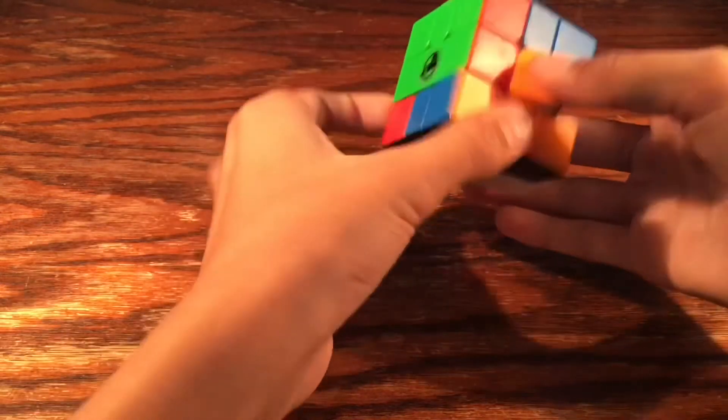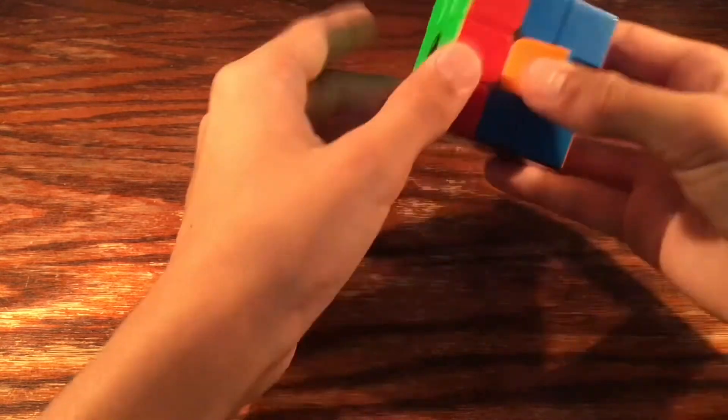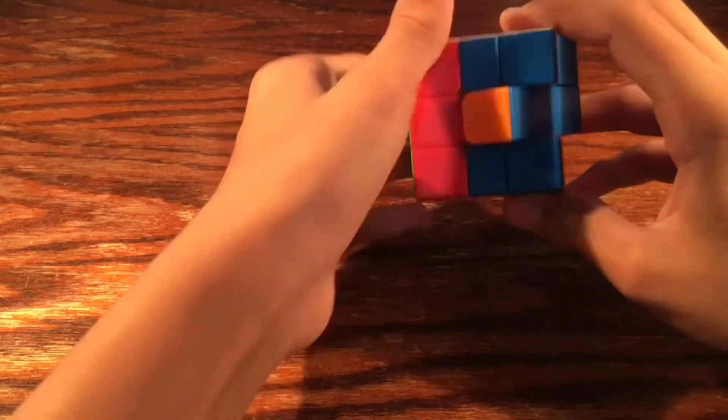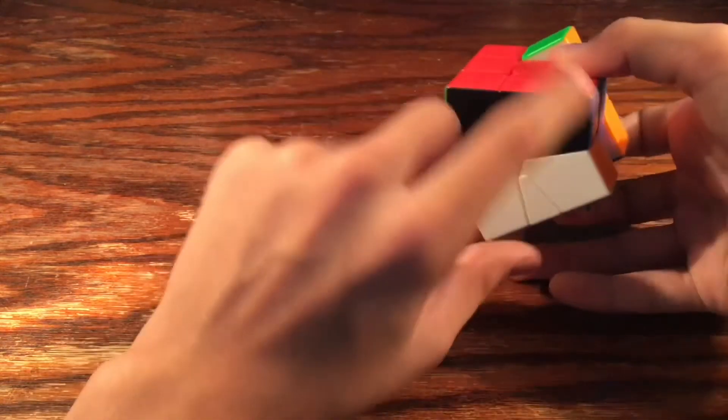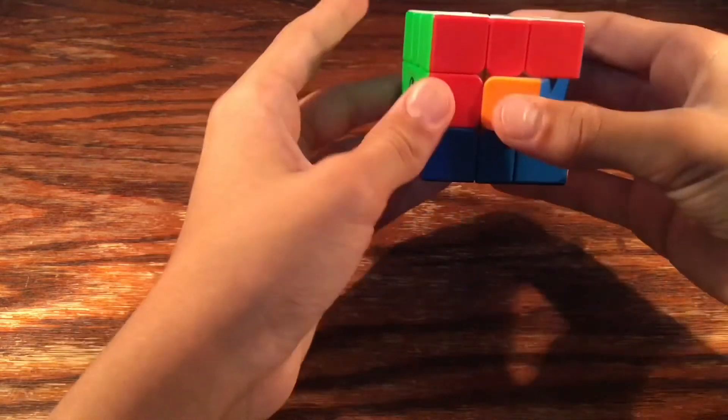And then we'd take this, and we'd take it all the way over here, and align that, and then slice, and then take this back right here, slice. And then slice, slice. We'll be right back.